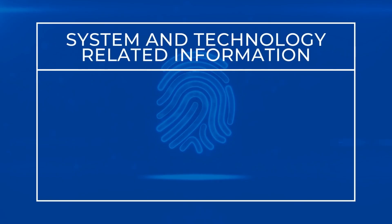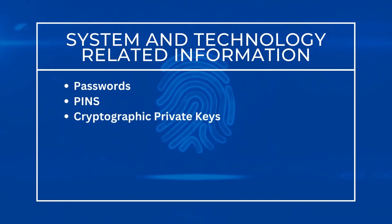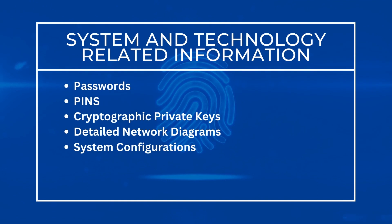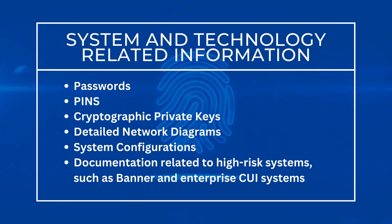System and technology related information, such as passwords, PINs, cryptographic private keys, network diagrams, system configurations, and documentation related to high risk systems, such as Banner and enterprise CUI systems, would also be considered highly sensitive and must be protected with the highest level of safeguards as defined in the university policies, standards, and procedures.